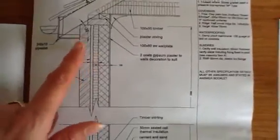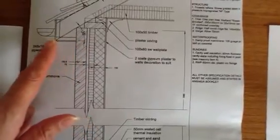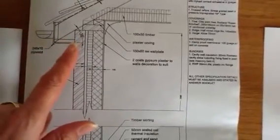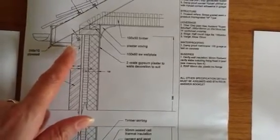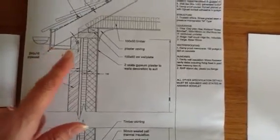If we actually have a look at the section, we can see that our roof is going to be a greater area than our footprint of our building. So we need to make an adjustment for the overhang at the eaves and at the verge.